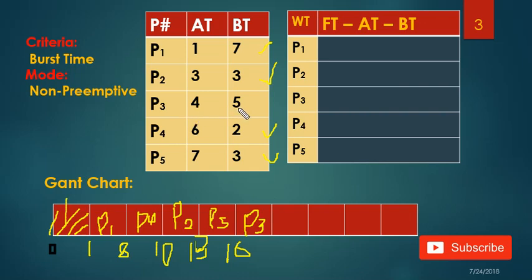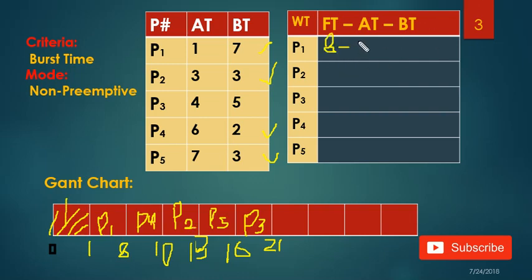The burst time for P3 is 5, so 16 plus 5 is 21. P1, P4, P2, P5, and P3 are all done. The finishing time for P1 is 8, for P4 is 10, for P2 is 13, for P5 is 16, and for P3 is 21. Now I'm going to calculate the waiting time for each process. The waiting time formula is: finishing time minus arrival time minus burst time. For P1: 8 minus 1 minus 7 equals 0.